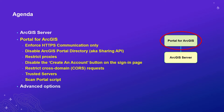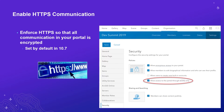Now we'll talk about the Portal for ArcGIS component of ArcGIS Enterprise. We're going to discuss configuring HTTPS communication only — similar to ArcGIS Server, this setting is configured by default at 10.7 and is configured in the Settings tab of your ArcGIS Enterprise instance. We'll also discuss the sharing API and how to disable the portal directory.